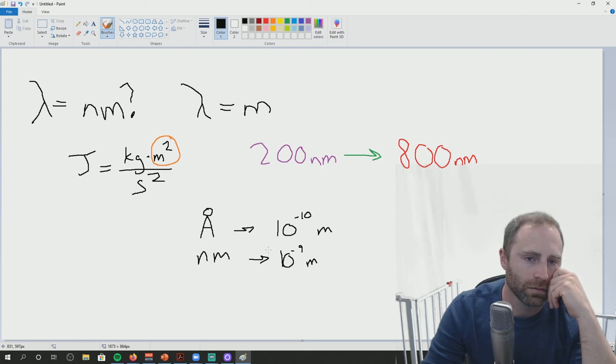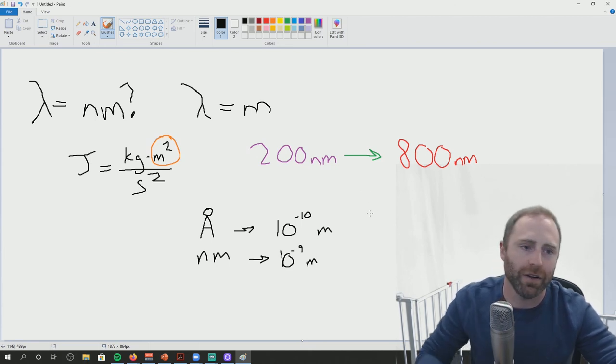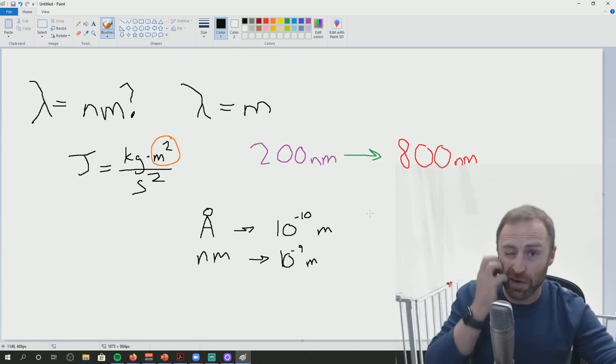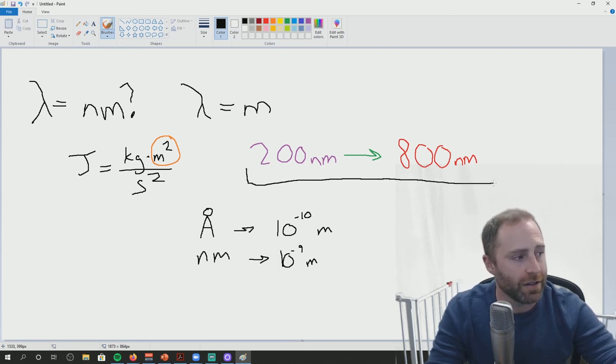So if I got an answer that was like zero point something nanometers for wavelength, would that be entirely unreasonable? No, it would not be unreasonable to have an answer that was zero point something nanometers. It would be unreasonable if it was saying like red light is zero point something nanometers. Because red light needs to be in the hundreds of nanometers. So visible light is going to be in this range here. If you're less than that, you're going to be in the UV, the x-ray, or the gamma radiation range.